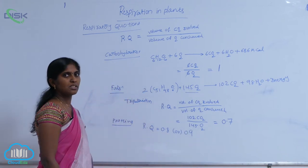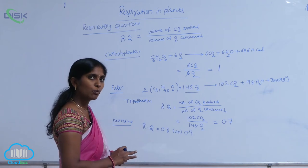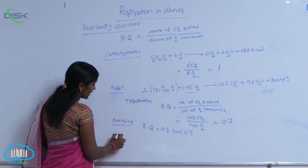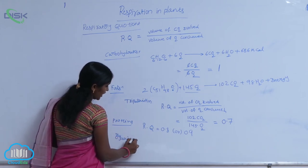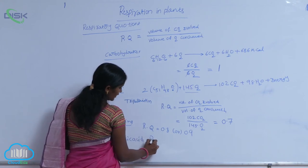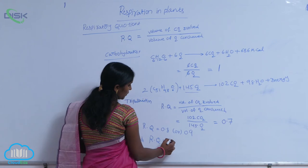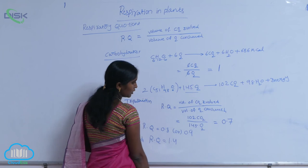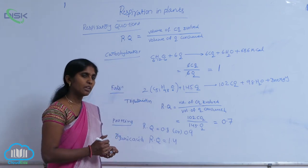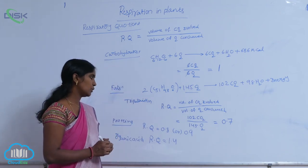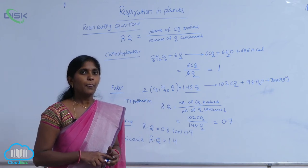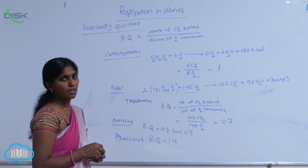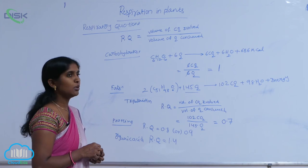And, when you come to the organic acids, they have respiratory quotient as more than 1, 1.4. More than 1, they have the respiratory quotient. It means, here, the evolved CO2 is more compared to the consumed oxygen.